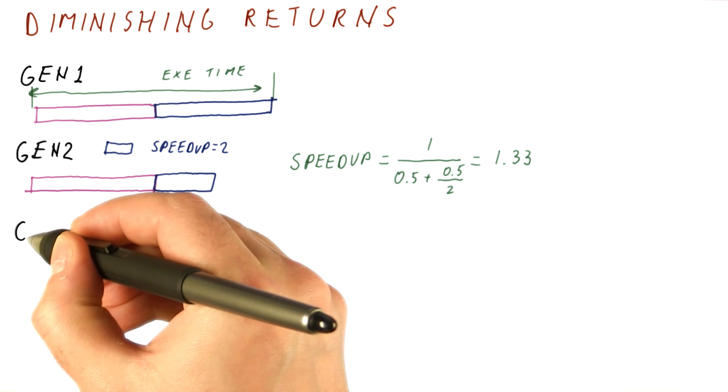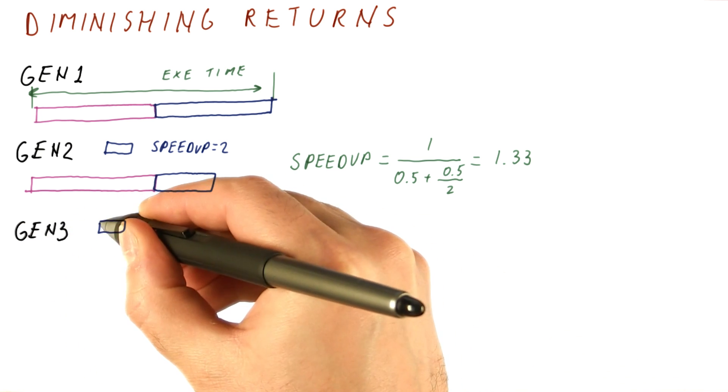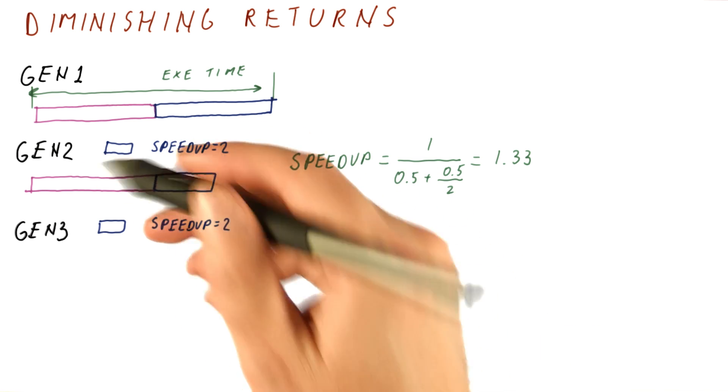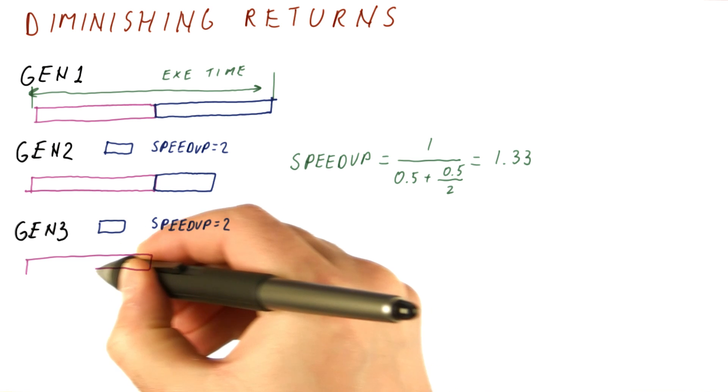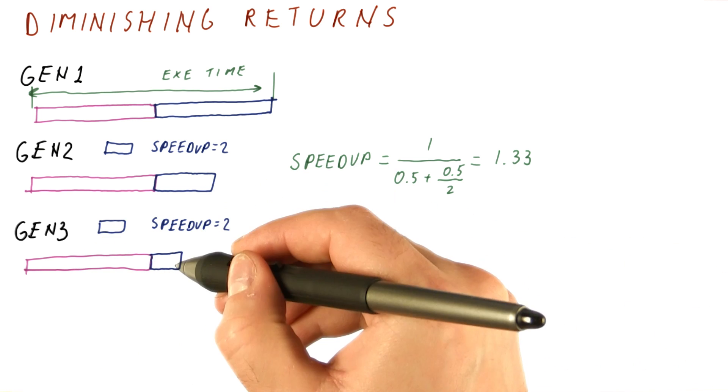Now let's say that we have a generation 3 processor where we again get the blue part and speed it up by a factor of 2, relative to the gen 2 processor. Now we have that the purple part is still the same, and the blue part is half of what it was.